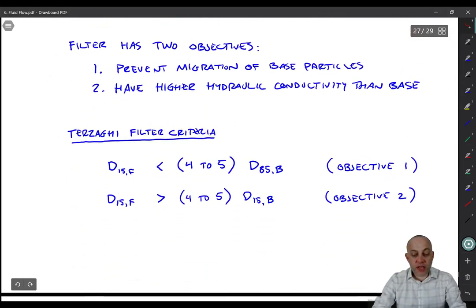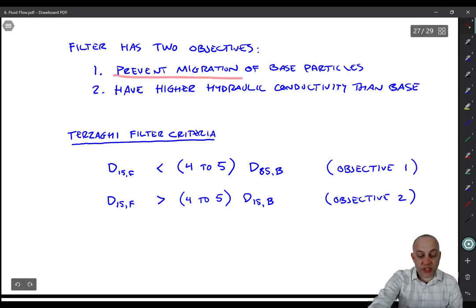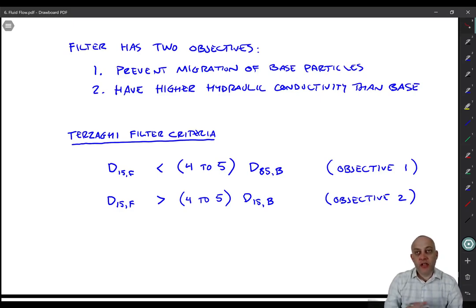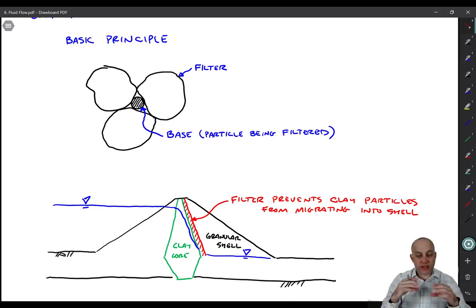So the filter has to satisfy two objectives. First, it has to prevent migration of the base particles. We don't want to lose that base material. So one job of the filter is to hold that material back. You can see it's going to be defined based on the grain size distribution of the filter relative to the base. And it would be more correct if we could figure out the size of the void space in the filter relative to the particle sizes in the base as the base particles migrate through the void space.